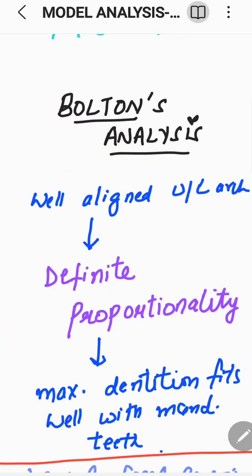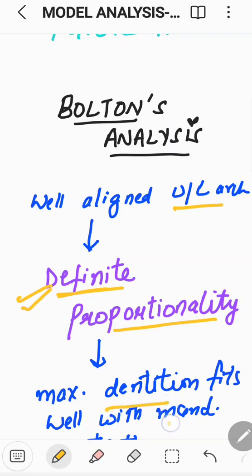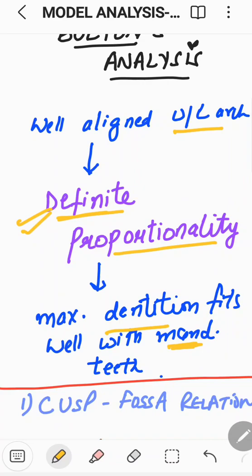Now about Bolton's analysis — in a well-aligned upper and lower arch with normal overjet and overbite, there exists a definite proportionality between both arches which helps in maintaining adequate overjet, overbite, and alignment of the teeth with respect to the arches. If this proportionality is met, the maxillary dentition fits well with the mandibular dentition. That is the importance of this definite proportionality amongst the arches. But what if this proportionality is not met or there is some discrepancy between the arches according to tooth size?